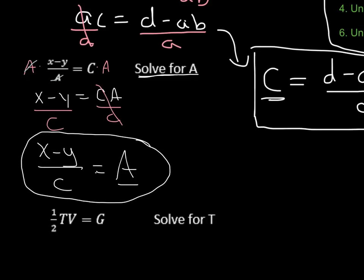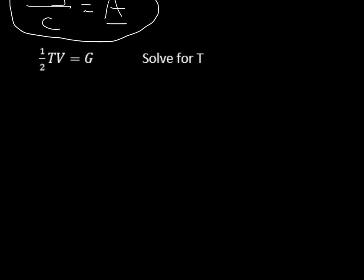Now, just one last one here. It says we have one-half tv equals g. Solve for t. So I'm going to go ahead and recopy this over here so I have enough room. But what we want to look at here is now I've got a fraction in front.